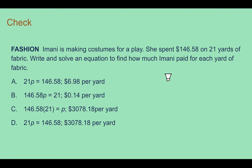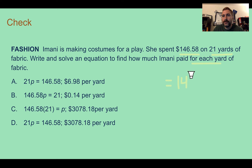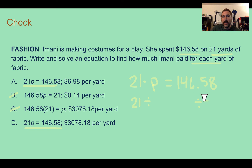Check your understanding: Read through the situation. Determine which equation shows how much Imani paid per yard of fabric, and calculate the cost per yard. She spends $146.58 total on 21 yards of fabric. Since price per yard is P, the equation is 21P equals 146.58 — so not choices V or C. This shows multiplication, so we divide both sides by 21, giving P equals $6.98, which is answer A.